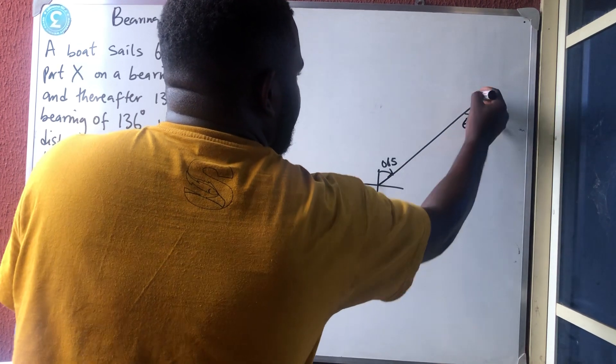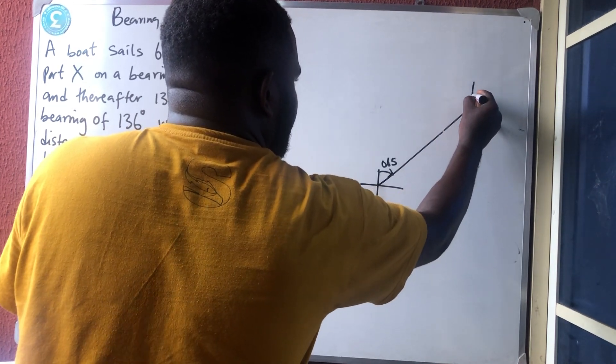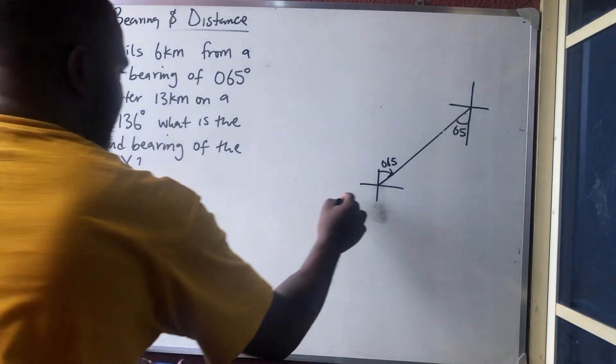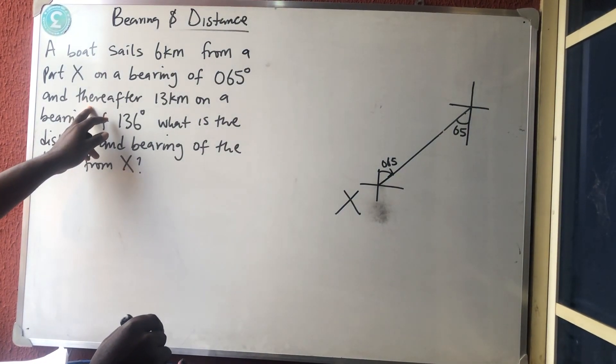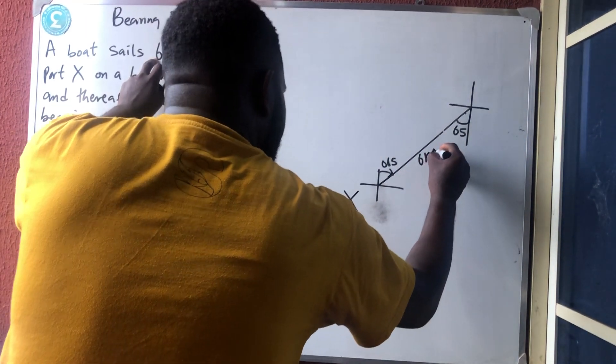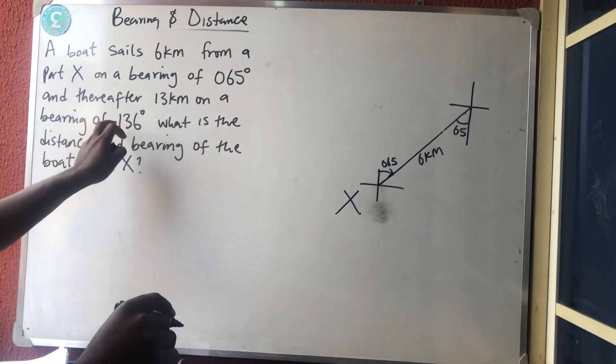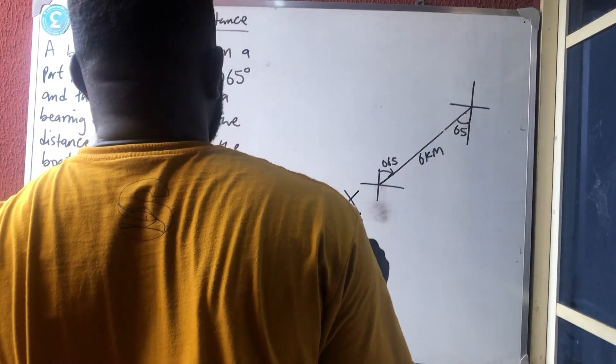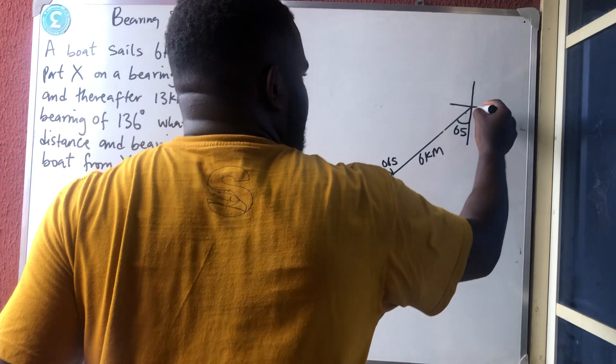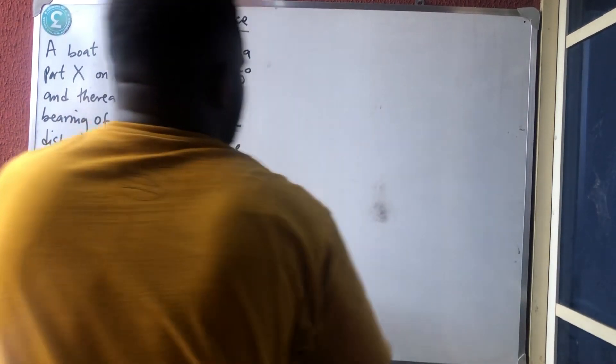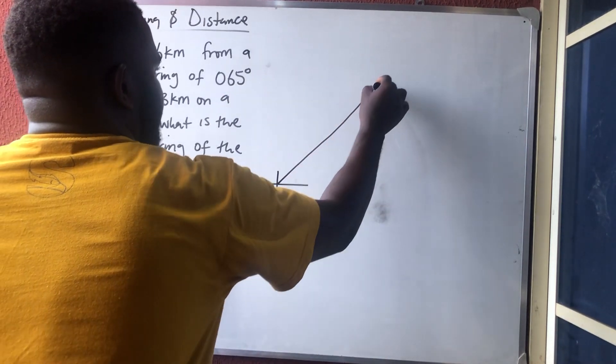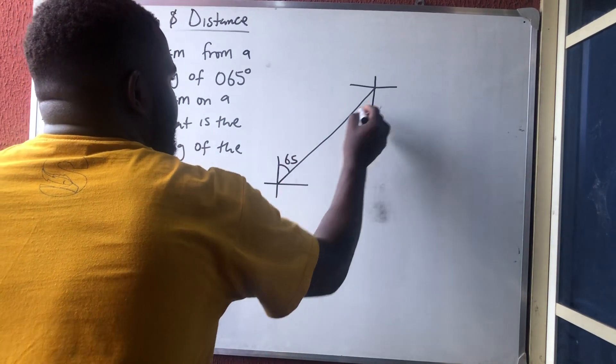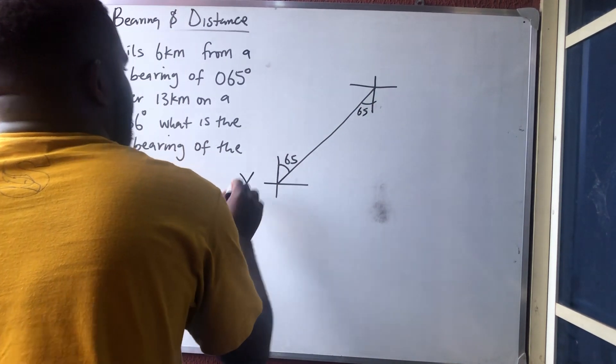Please cut with a straight line. So here is what, 65°. So from a port X, six kilometers. From here to here is 65°, so automatically here will be 65°. So this is the X on what, six kilometers.